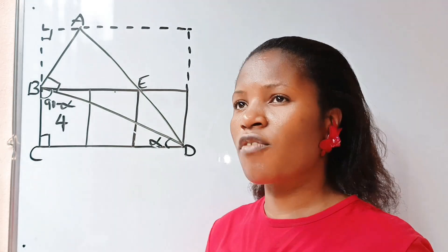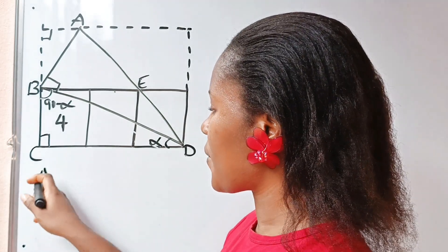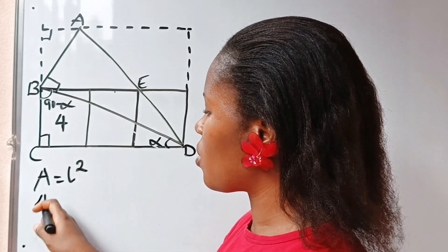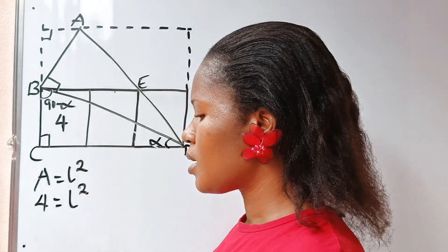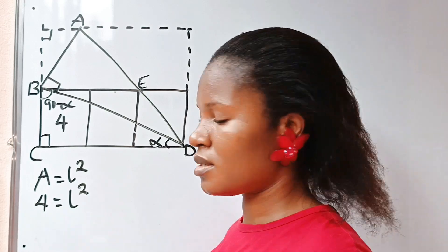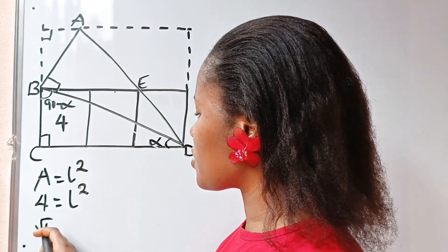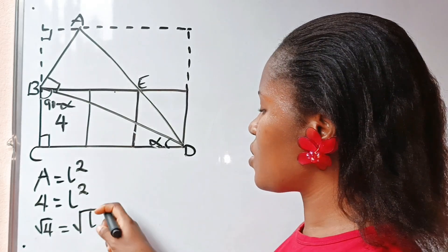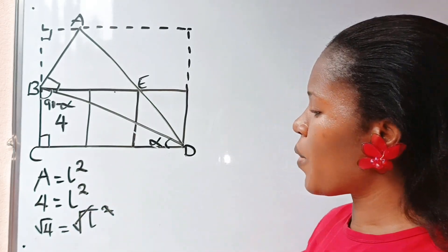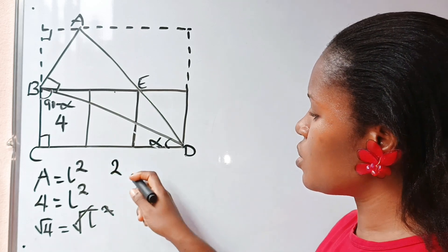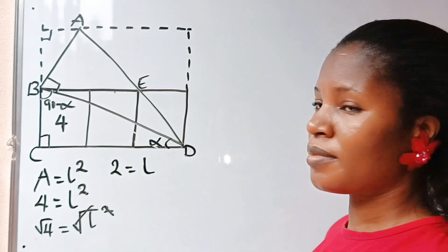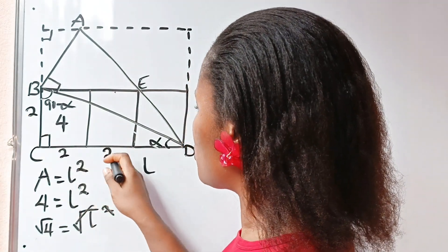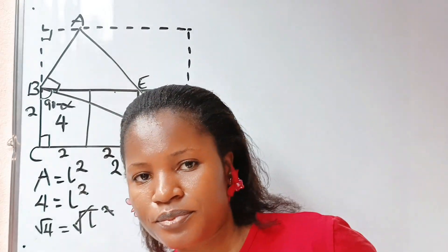Remember that the area of a square is equal to length squared. So our area 4 is equal to length squared. Taking the square root of both sides, the square root of 4 is 2, which equals our length. So it means that this side is 2, this is 2, this is 2, and this is 2 as well.